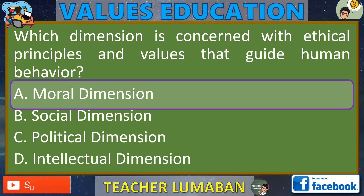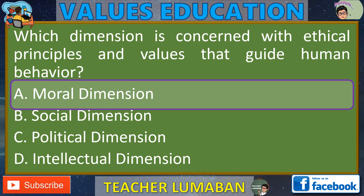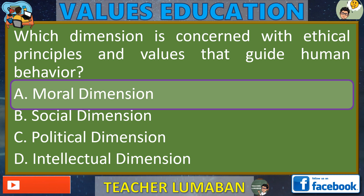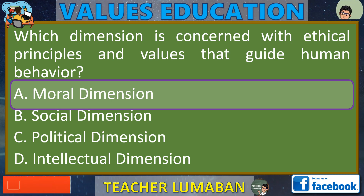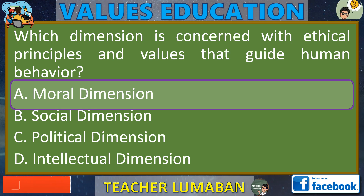Paliwanag: Ang moral na dimensyon ay nababahala sa mga prinsipyo at pagpapahalagang etikal na gumagabay sa pag-uugali ng tao. Sinasaklaw nito ang mga individual at kolektibong pagpili, aksyon, at desisyon batay sa kung ano ang itinuturing na tama o mali sa moral. Tinatalakay nito ang mga tanong ng moralidad, etika, at personal na paniniwala na humuhubog sa ating pag-uugali at pakikipag-ugnayan sa iba.